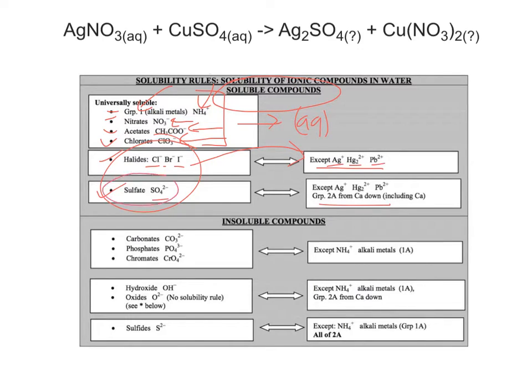or if sulfate is paired with silver, mercury, lead, and a group 2A metal from calcium down. If it is with one of these, then it is going to precipitate, it will be solid. However, if these are not there, then it will just be aqueous. Sorry for all the scribbles, hopefully you're following.